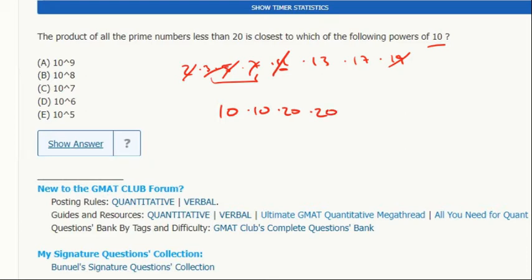And then 13 times 17. One of them is a little bit less than 15 and a little bit more than 15, so let's call them both 15.